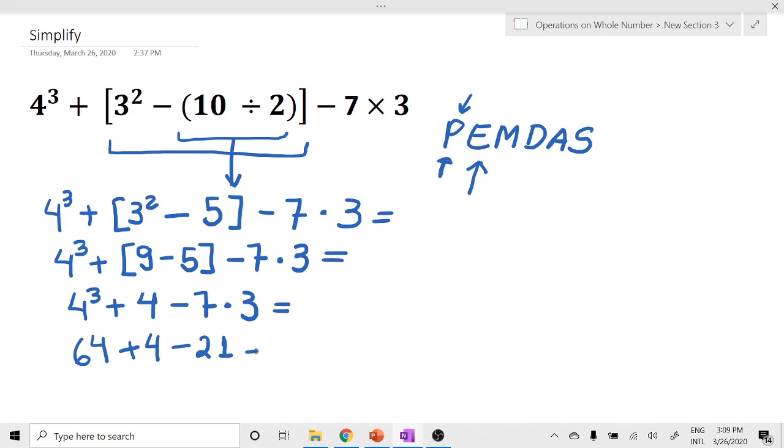From left to right, since we have only addition and subtraction, we're going to solve what comes first from left to right. So 64 plus 4 is 68 minus 21. How much is 68 minus 21? Let's do it here very quickly. 8 minus 1 is 7. 6 minus 2 is 4. And the result is 47. And that's the answer.